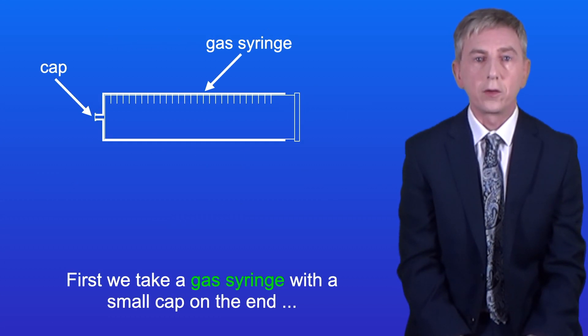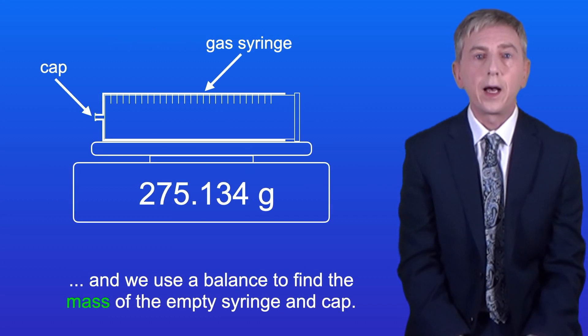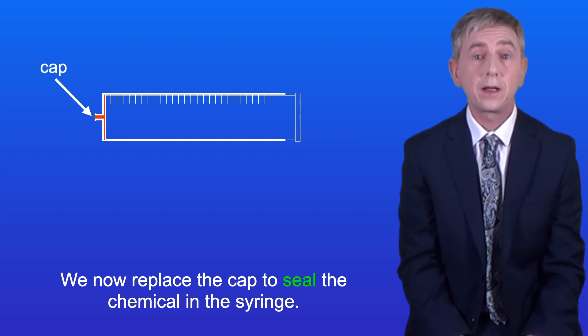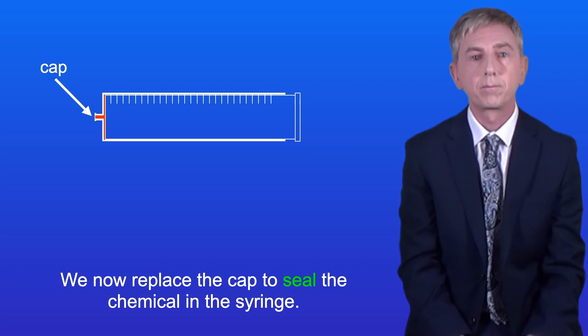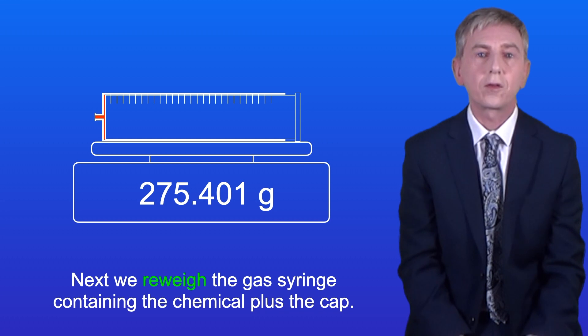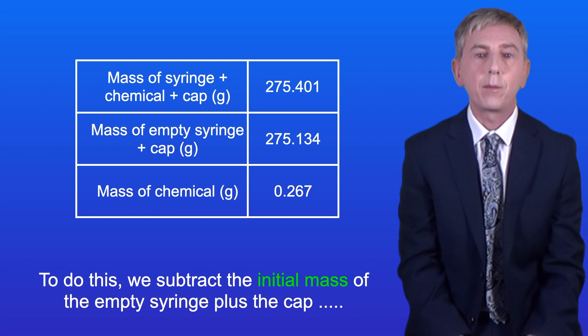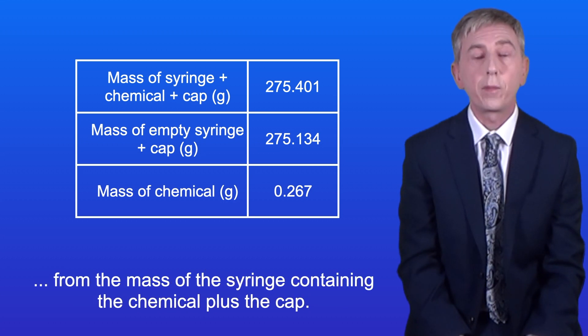First we take a gas syringe with a small cap on the end and we use a balance to find the mass of the empty syringe and the cap. Now we remove the cap and draw a small volume of our chemical into the syringe. We now replace the cap to seal the chemical in the syringe. Next we re-weigh the gas syringe containing the chemical plus the cap. At this point we can now calculate the mass of chemical in the syringe.